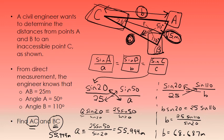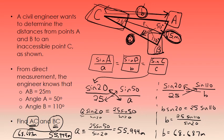Side B, also known as side AC, has a length of 68.687 meters. Using the law of sines, we were able to find the length of side A and side B — or in the context of the problem, side BC and side AC — although they would be inaccessible to the civil engineer.